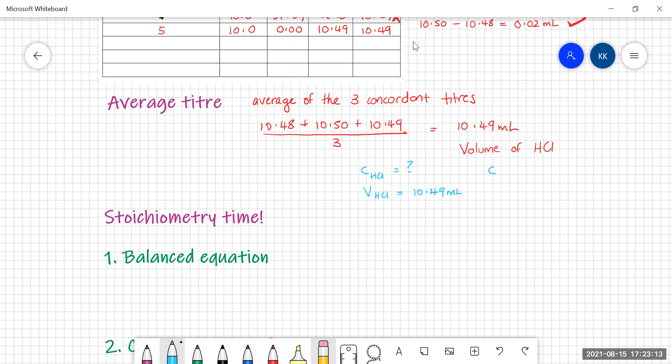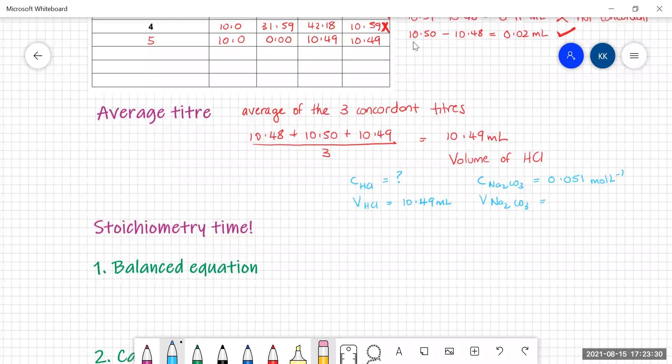Your concentration of sodium carbonate was 0.051 moles per litre. The volume of sodium carbonate was our pipette volume, which is 10 mils.